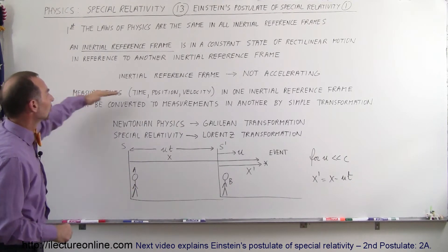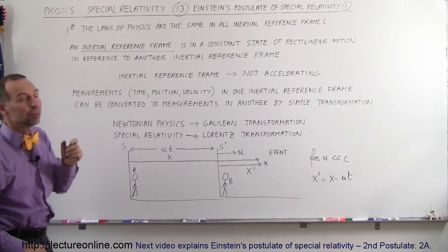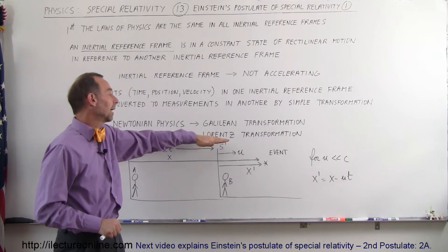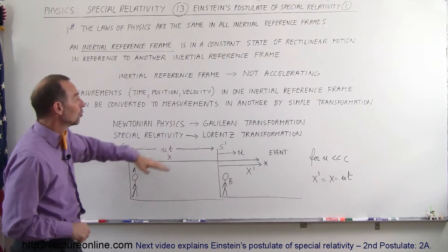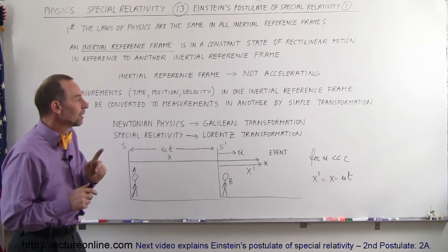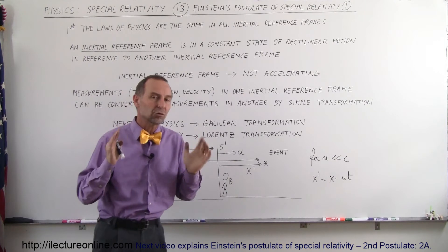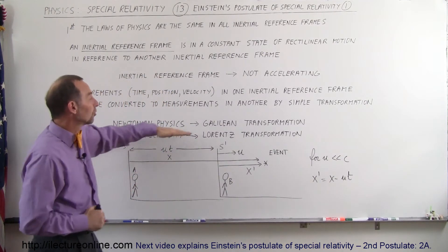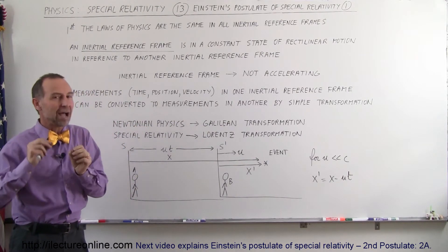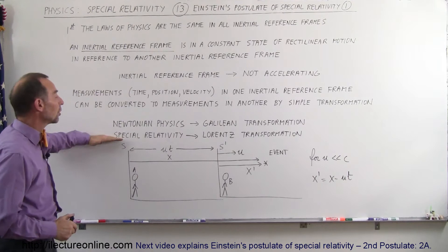Measurements such as time, position, and velocity in one inertial reference frame can be converted to measurements in another by a simple transformation. There are two types of transformations: the Galilean transformation and the Lorentz transformation. We use the Galilean transformation for Newtonian physics — when the speed is much, much less than the speed of light. But if the speeds involved are very high, approaching the speed of light, then we have to use the Lorentz transformations, and then we're dealing with what we call special relativity.